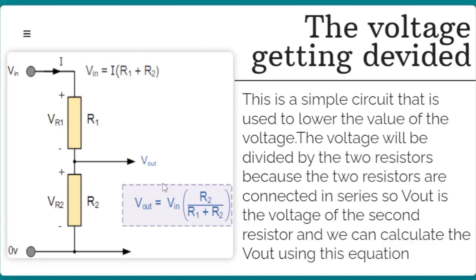V_out is going to be, for example, 5 volts. So we have two resistors that are going to lower the value of the voltage. V_out is the voltage across R2, the second resistor. To calculate V_out, the equation is: V_out equals V_in times R2 divided by R1 plus R2. So V_out is the voltage that exists over the second resistor.